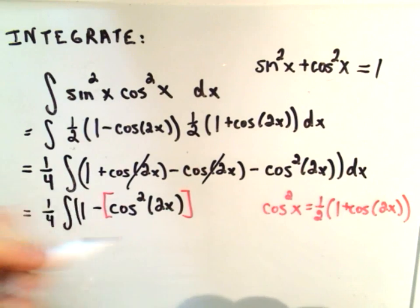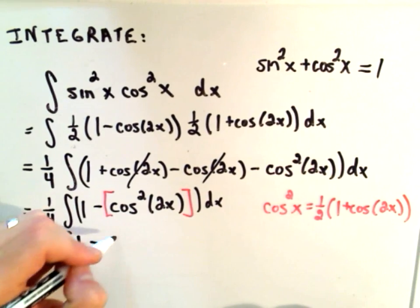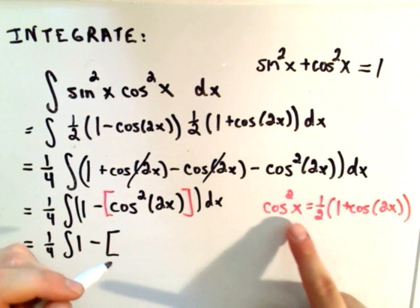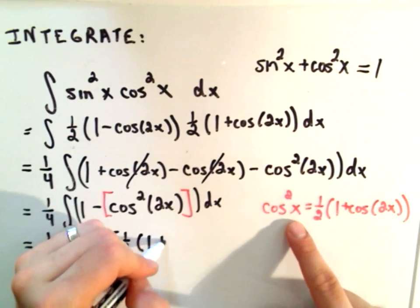One-fourth out front. I'm going to leave the one alone, minus. Now if I use this identity, I get one-half, one plus cosine.